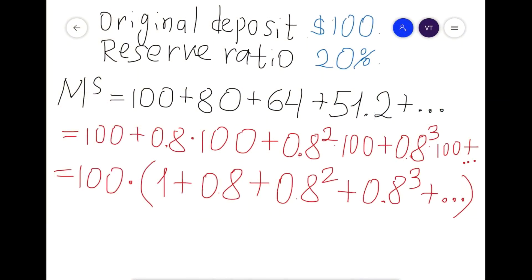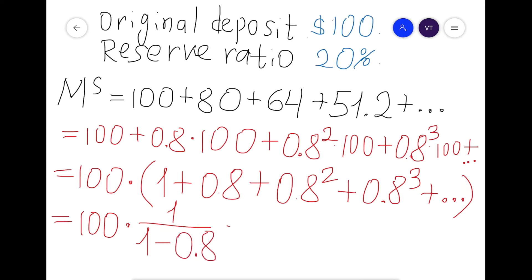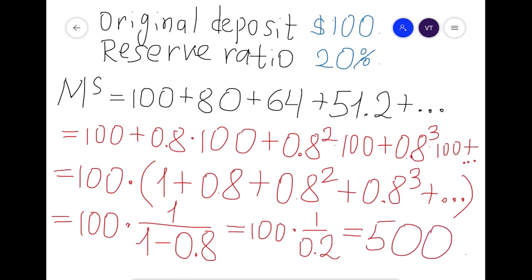Let's apply the geometric series formula to our money creation example. The full sequence equals 100 × 1/(1 − 0.8) = 100 × 1/0.2 = 500. The original deposit of $100 will create a total money supply of $500.